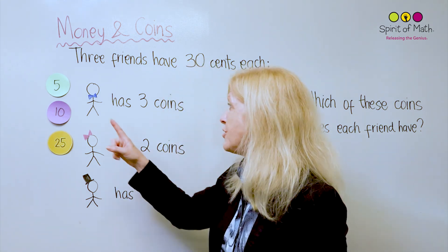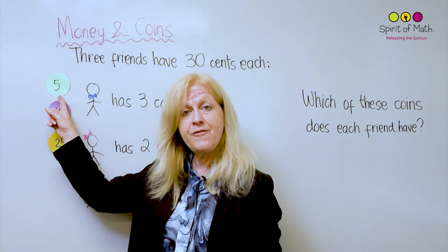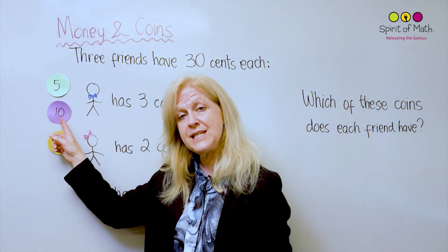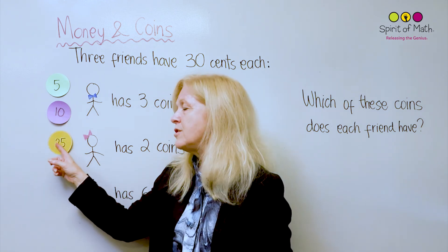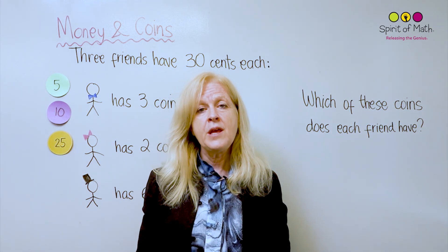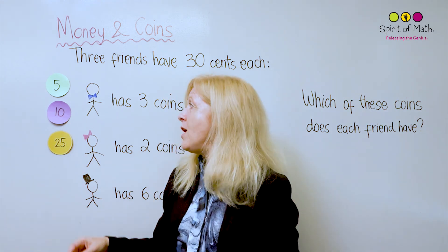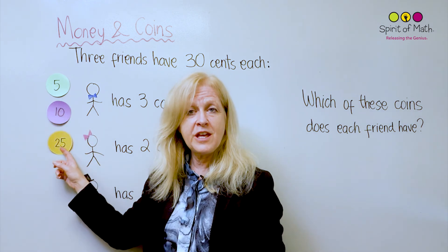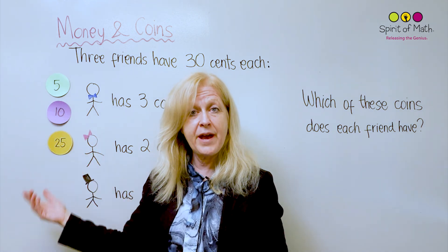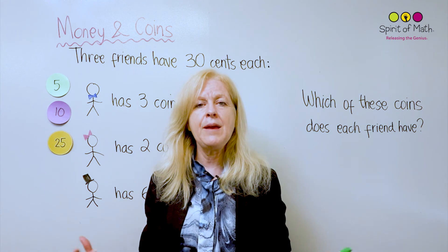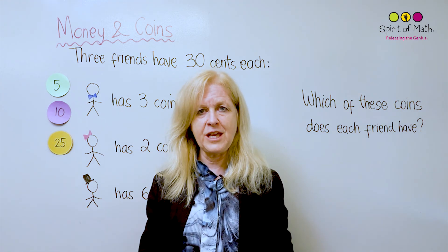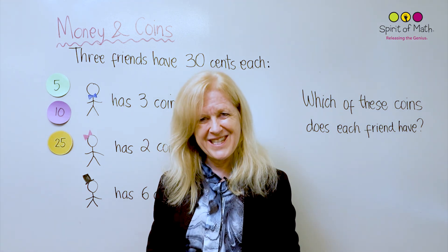The first coin you're going to use is a 5 cent coin, the second coin is a 10 cent, and the third is a 25 cent coin. If you don't have cents — if you have shillings — you can think of it that way as well. It doesn't matter what it is, it's the same idea. How do you make 30 of these coins?